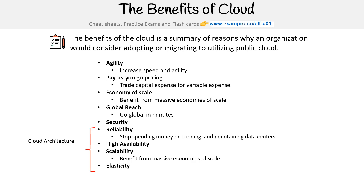In terms of how I organize this course, we're not going to cover them in this section because I have the cloud architecture section, so just understand that we will come to those eventually. I would also say that AWS is still missing something on this list, which is fault tolerance. So my list looks like this, except I would add fault tolerance to it.